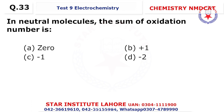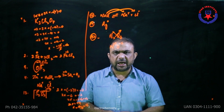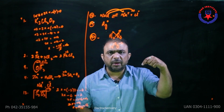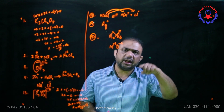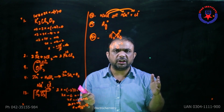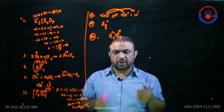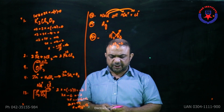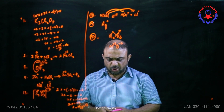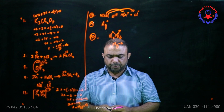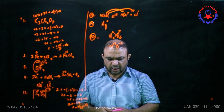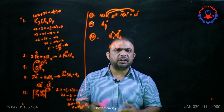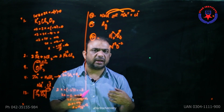Question 33: in neutral molecules, the sum of oxidation numbers is zero. The molecule overall is neutral — every atom has equal protons and electrons, so the net resultant value is zero. Question 34: the statement 'both Fe²⁺ and Fe³⁺ are called anions' is wrong. Ions with a positive charge are always called cations.